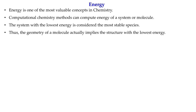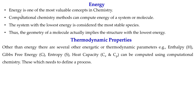In addition to energy, we can also calculate thermodynamic properties. There are many forms of energy used to define chemical processes — for example, Gibbs free energy, entropy, heat capacity at constant pressure or at constant volume. All of these can be computed, and they are all needed to define a thermodynamic process or a chemical reaction.